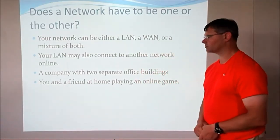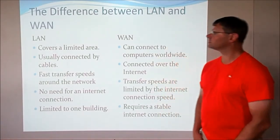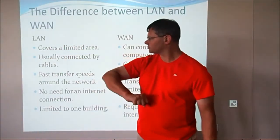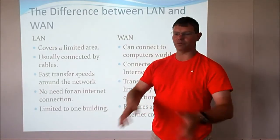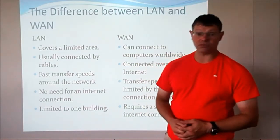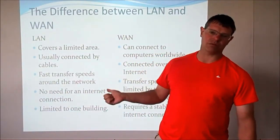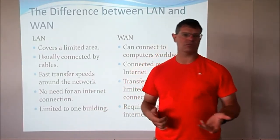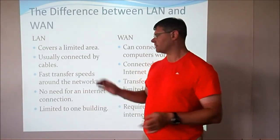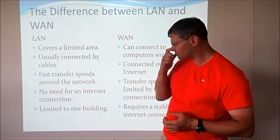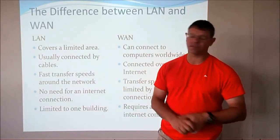The main important thing is that you know the difference between LANs and WANs. To summarise — LANs cover a limited area, within a building or a range of buildings next to each other. You normally connect them with cables, though you can use Wi-Fi. You have good, fast transfer speeds around your network. Ethernet cables and fibre optic cables especially allow you to send data very quickly because everything is hardwired. You don't need an internet connection to run a LAN, though you may have one. The LAN on its own doesn't require one.